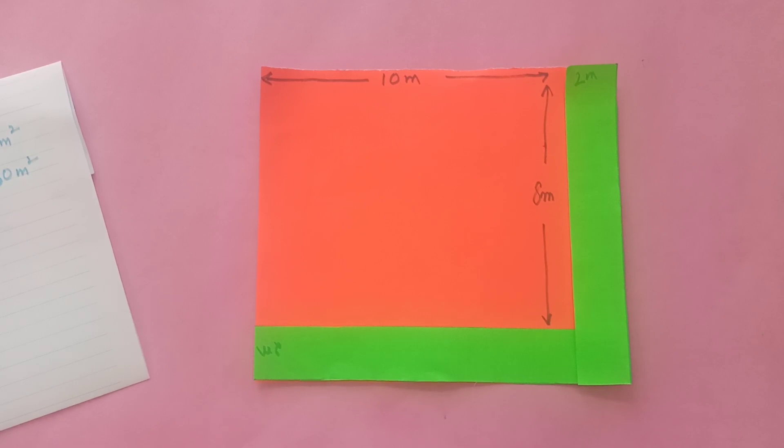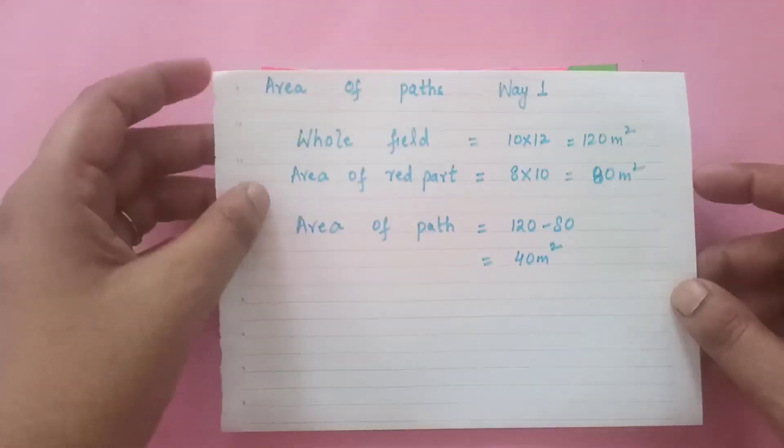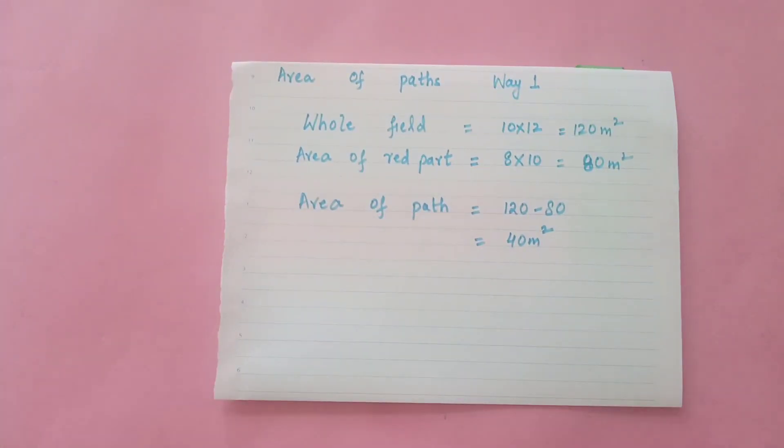So now what to do? To find out the area of the paths, that is the green strips, what are we going to do? The whole field, the area of the whole field is 10 into 12, that is 120 meter square.